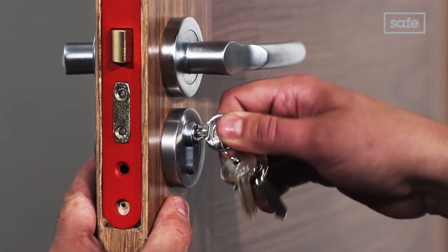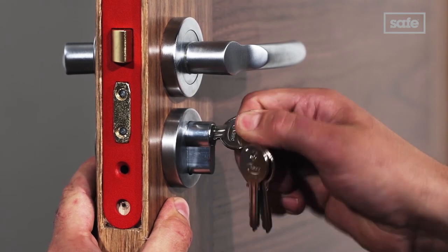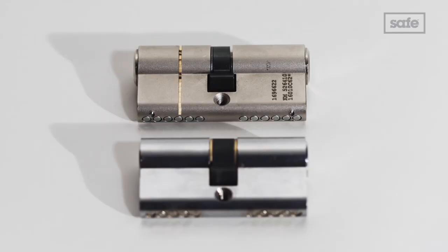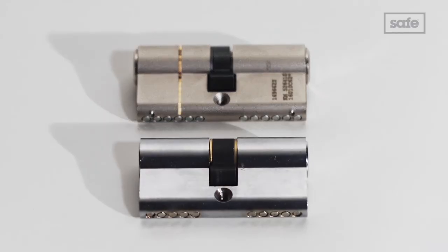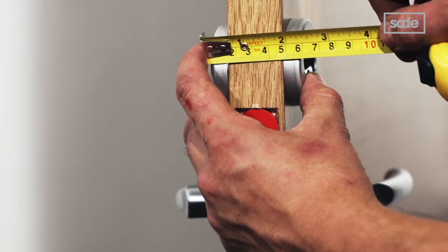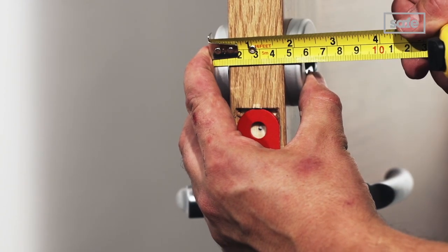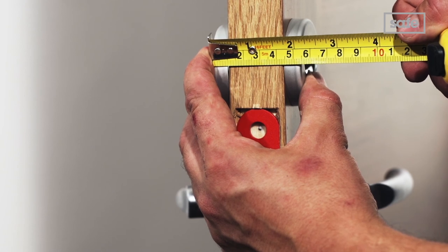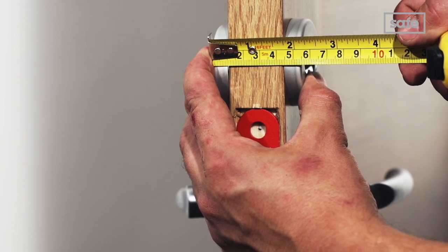If you're simply replacing a cylinder, it's a good idea to measure the existing cylinder as this will tell you exactly what size replacement to buy. If you're measuring for a new door however, do remember to take into account the width of any door furniture, such as handles or escutcheons, also known as keyhole covers.